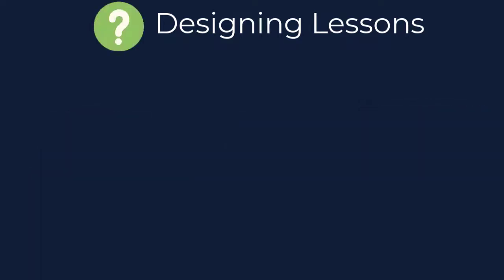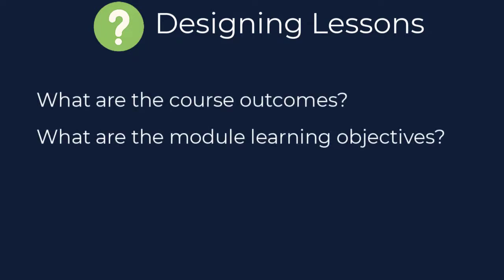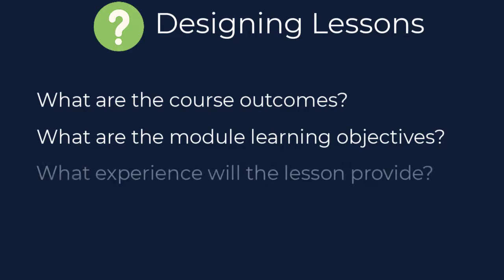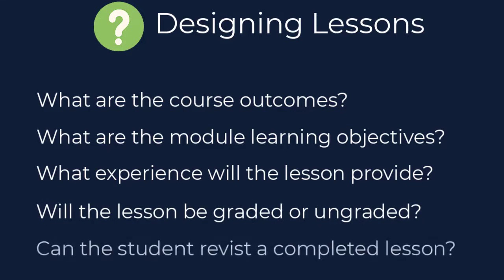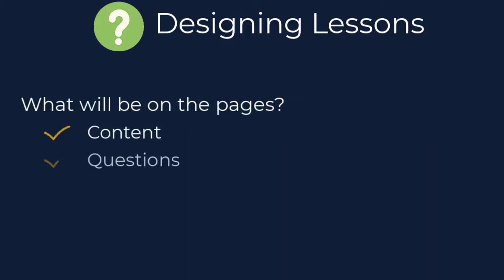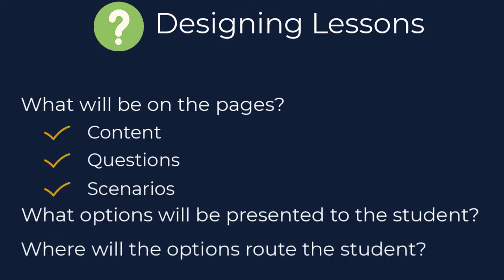Consider the following questions when planning your lesson: What course outcomes and module learning objectives do you want to address in this activity? What type of experience do you want the students to have during the lesson? Will it be graded or ungraded? And will students be able to go back and revisit the lesson once completed? After you address these questions, begin working through the design of the lesson and ask yourself a few more: What will be on each of the pages — content, questions, scenarios? What options will be presented to the student after reviewing each page? And where will these options route the student?